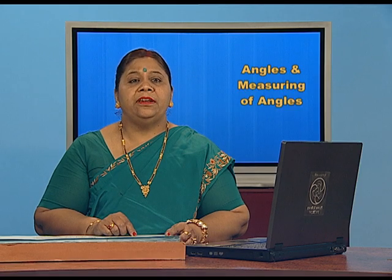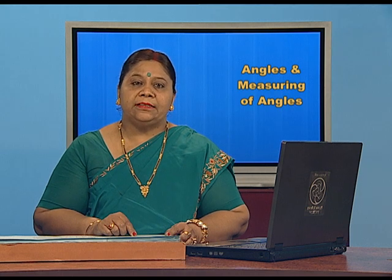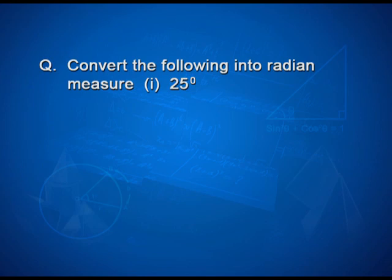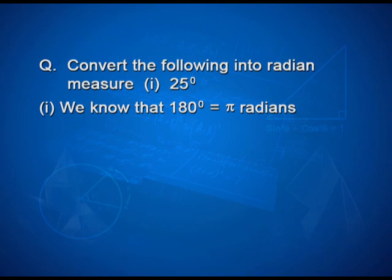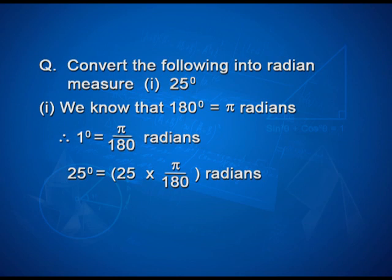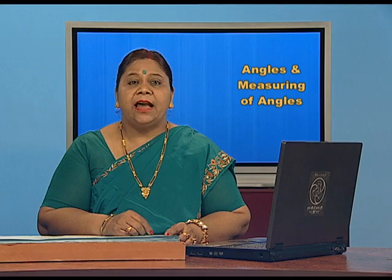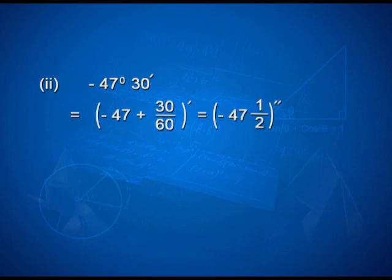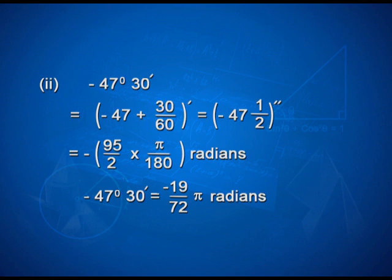Having studied the relation between degree and radian, let us solve some examples. Convert the following into radian measure. For 25 degrees: we know 180 degrees equals π radians, therefore 1 degree equals π/180 radians. So 25 degrees equals 25 × π/180 radians, which simplifies to 5π/36 radians. For −47 degrees 30 minutes: this can be written as −(47 + 30/60) degrees, that is −47.5 degrees, which converts to −19π/72 radians.